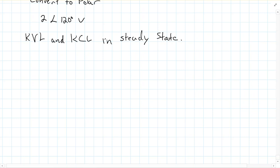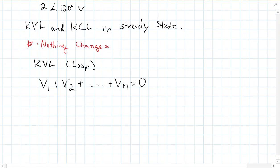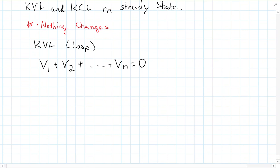Well, the good news is here, nothing changes. And what do I mean? Well, KVL, remember this is for a loop, we have, and these are going to be all phasor voltages that I'm writing, that if we sum up the voltages in a loop, we get zero, which is still true. But again, I want to emphasize here, these are all phasor voltages.